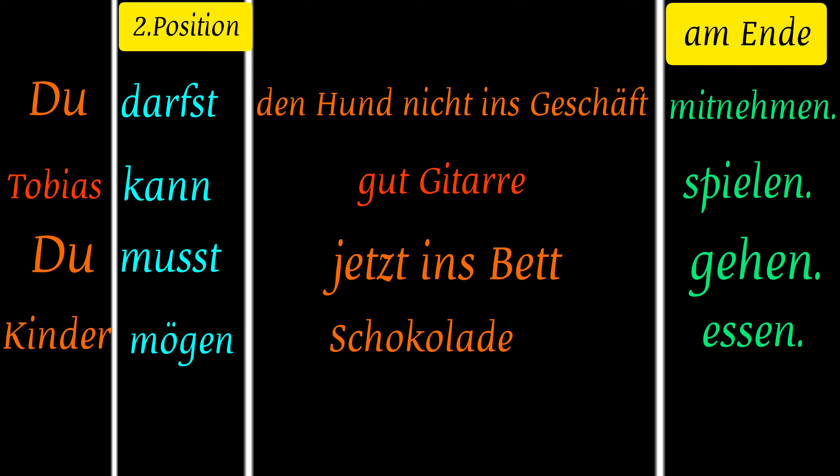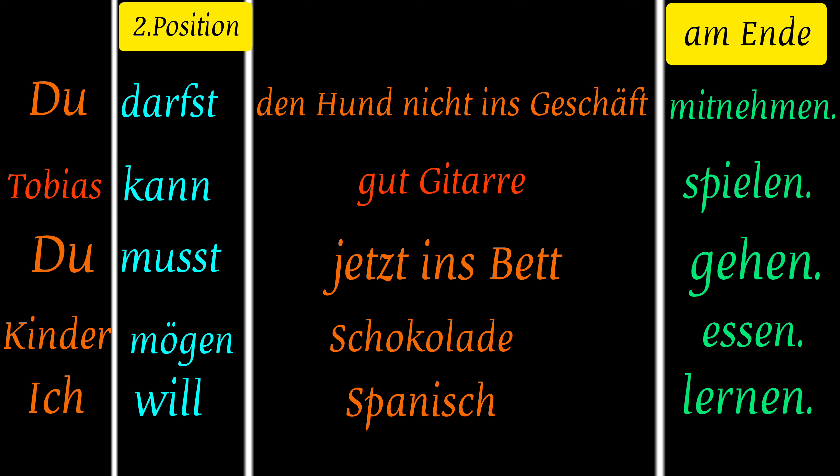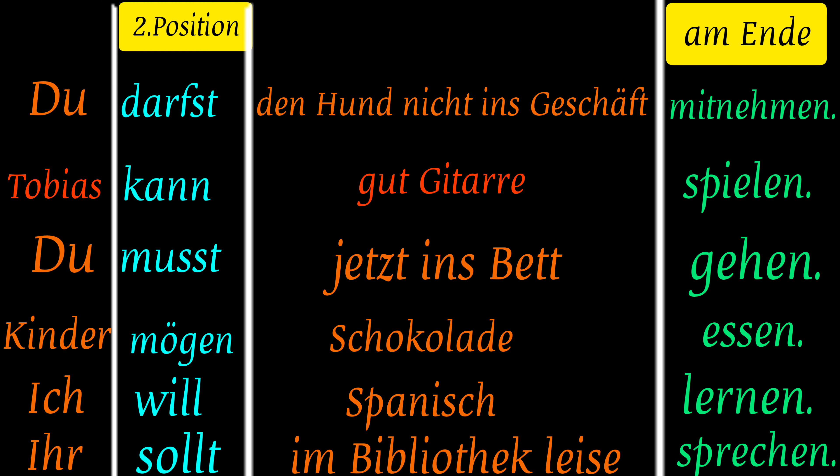'Kinder mögen Schokolade essen' — mögen is in second position, essen is the infinitive main verb at the end. 'Ich will Spanisch lernen' — wollen is conjugated as 'will' in second position, and lernen is in infinitive at the end. Similarly with sollen: ich soll is in second position and the main verb comes in infinitive at the end of the sentence.